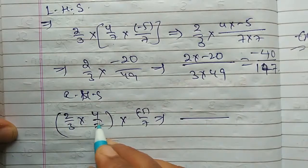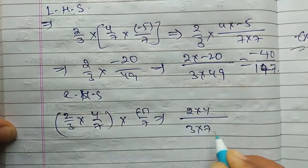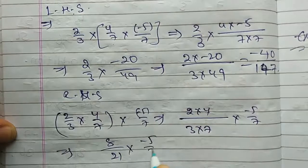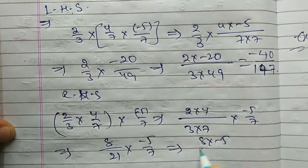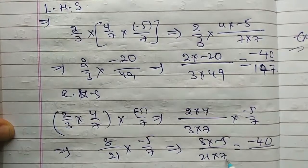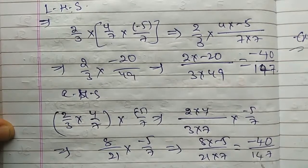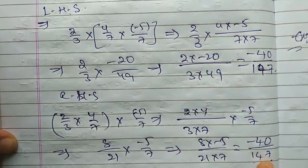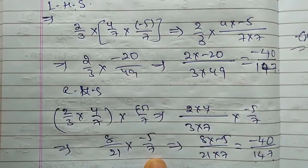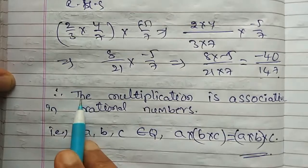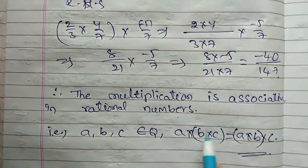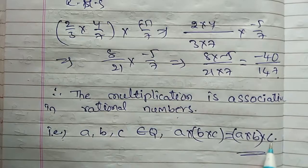Now RHS: (2/3 × 4/7) × (−5/7). First, 2/3 × 4/7 = 8/21. Then 8/21 × (−5/7) = −40/147. So RHS = −40/147. LHS = RHS = −40/147. Therefore rational numbers under multiplication satisfy the associative property. That is, for A, B, C belonging to rational numbers: (A × B) × C = A × (B × C).